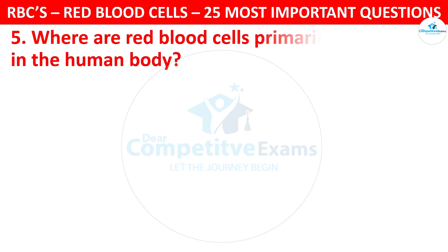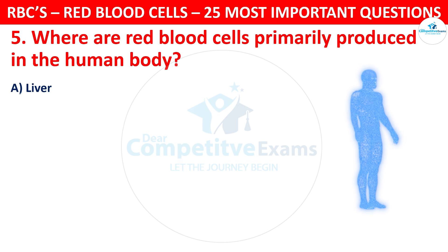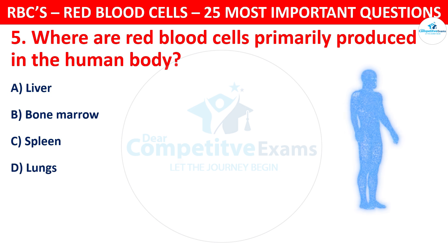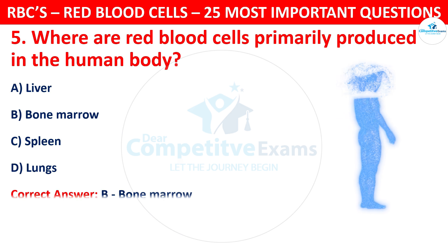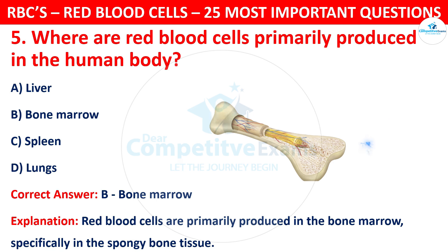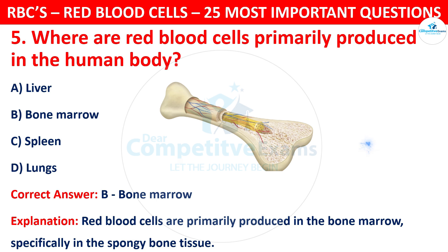Question 5. Where are red blood cells primarily produced in the human body? Your options are: Liver, Bone Marrow, Spleen, or Lungs. The correct answer is B, that is Bone Marrow. Red blood cells are primarily produced in the bone marrow, specifically in the spongy bone tissue.